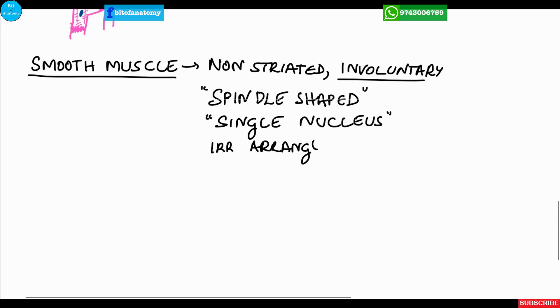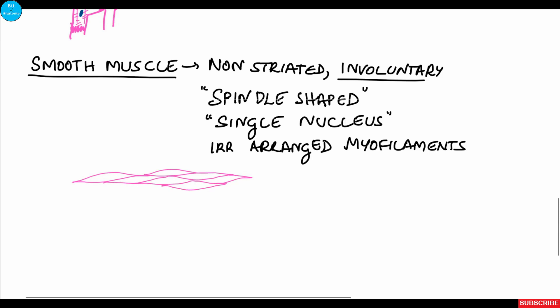Striations are absent because the myofilaments are arranged in an irregular pattern. The cell is spindle-shaped where the central part is bulged and the peripheral end is tapering. Each cell contains a single central nucleus. These are the histological features of muscular tissue. Do subscribe for future updates. Thank you.